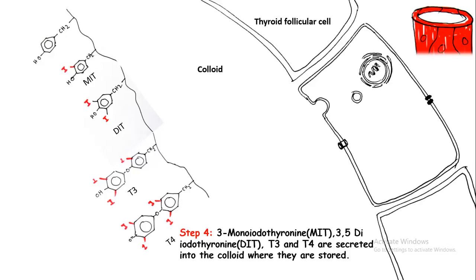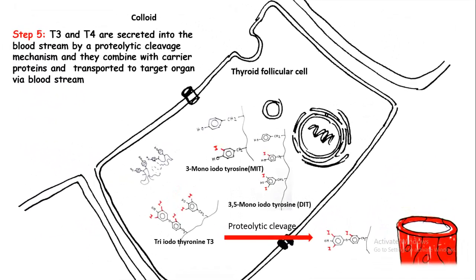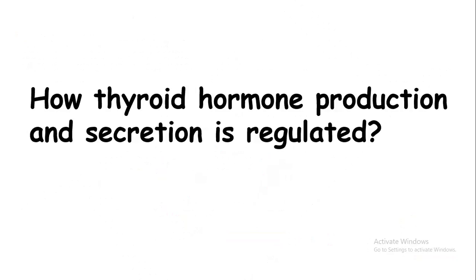The signal for release comes from the anterior pituitary in the form of thyroid stimulating hormone (TSH). When TSH arrives, the thyroglobulin is cleaved and T3 and T4 are secreted into the bloodstream, from where they can travel to their target organs.